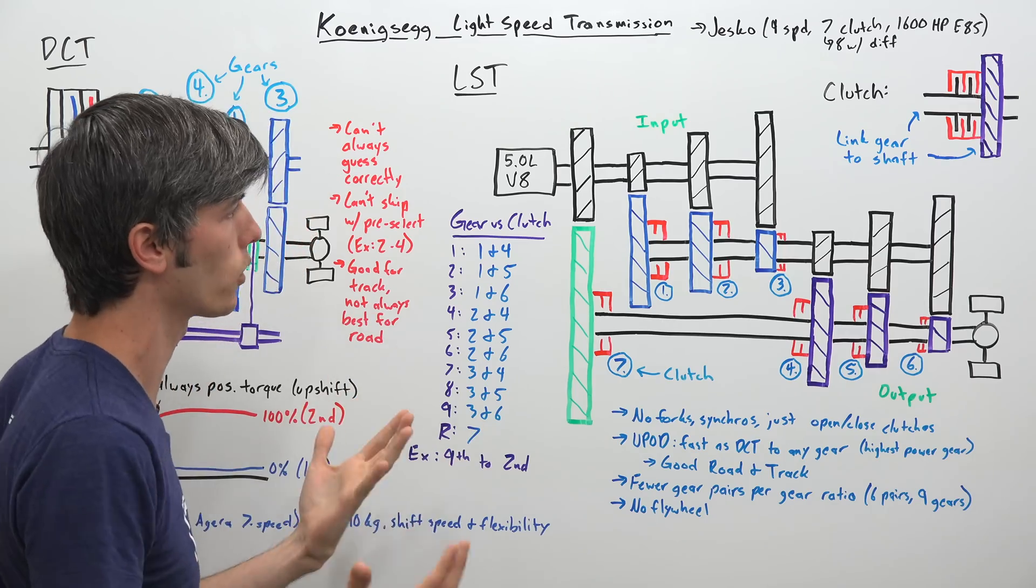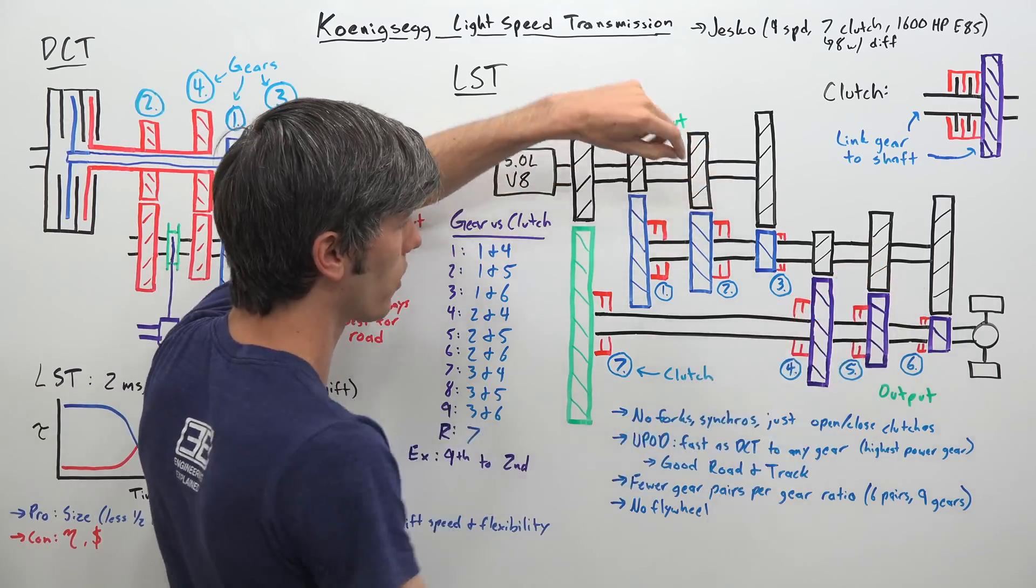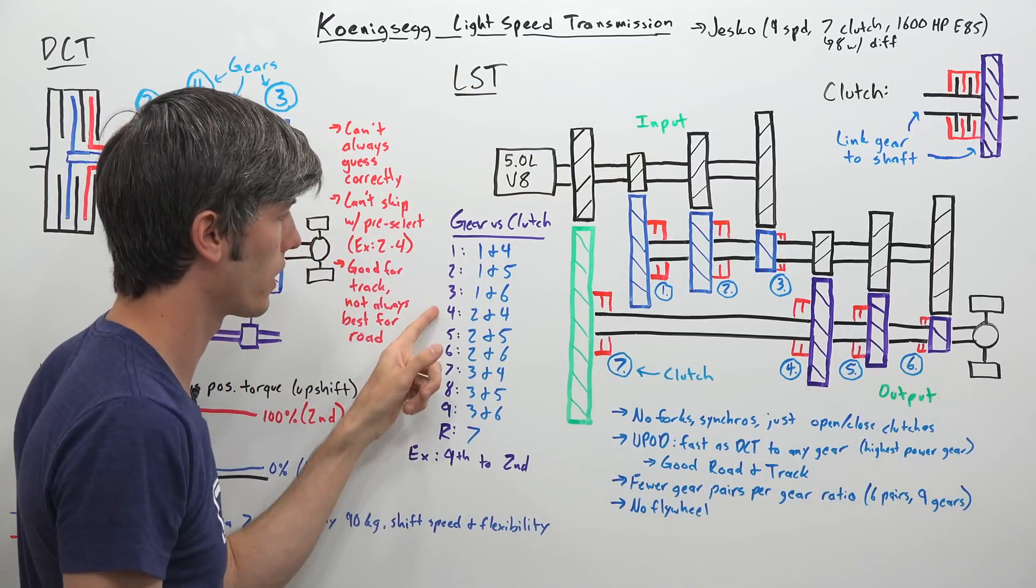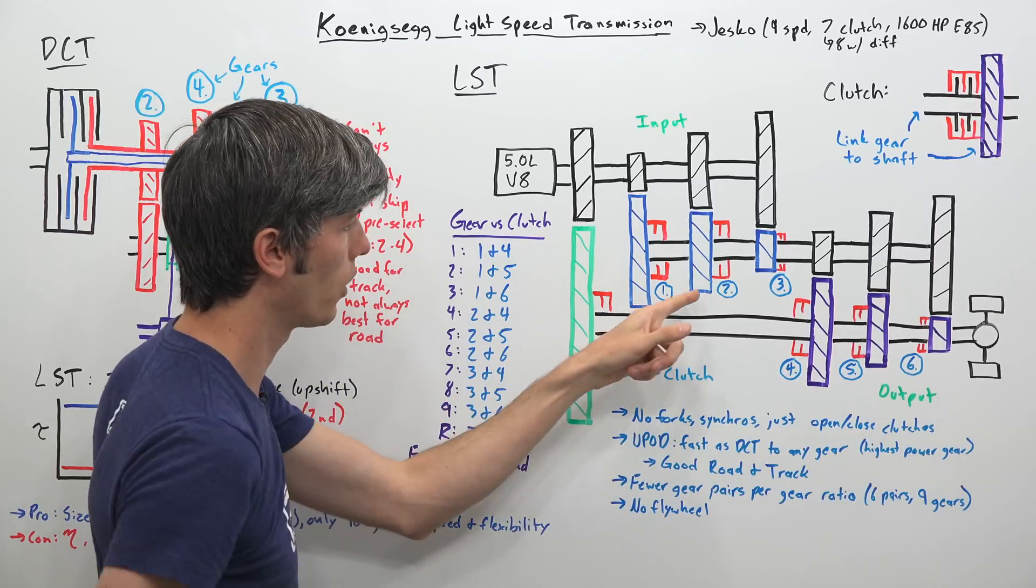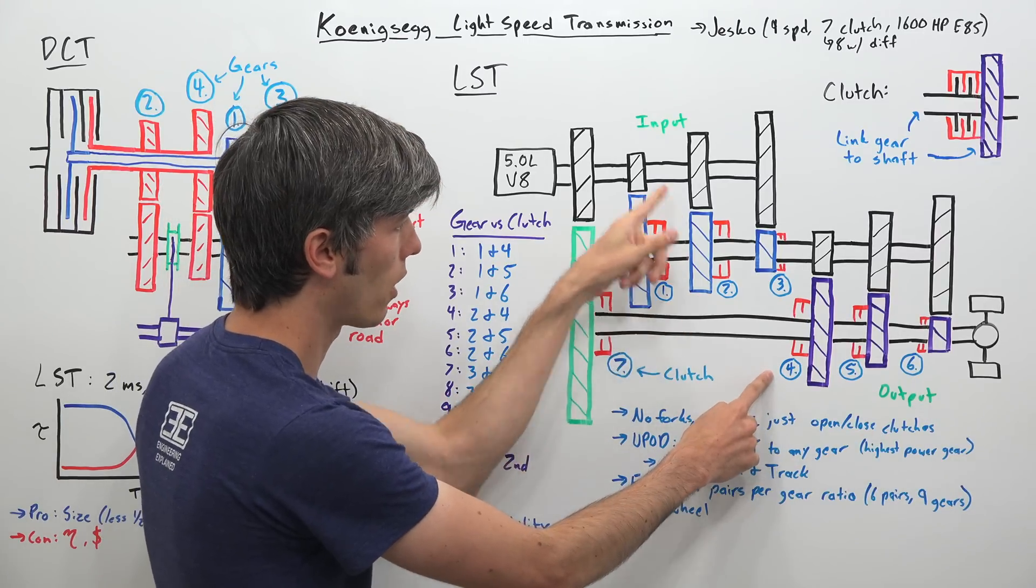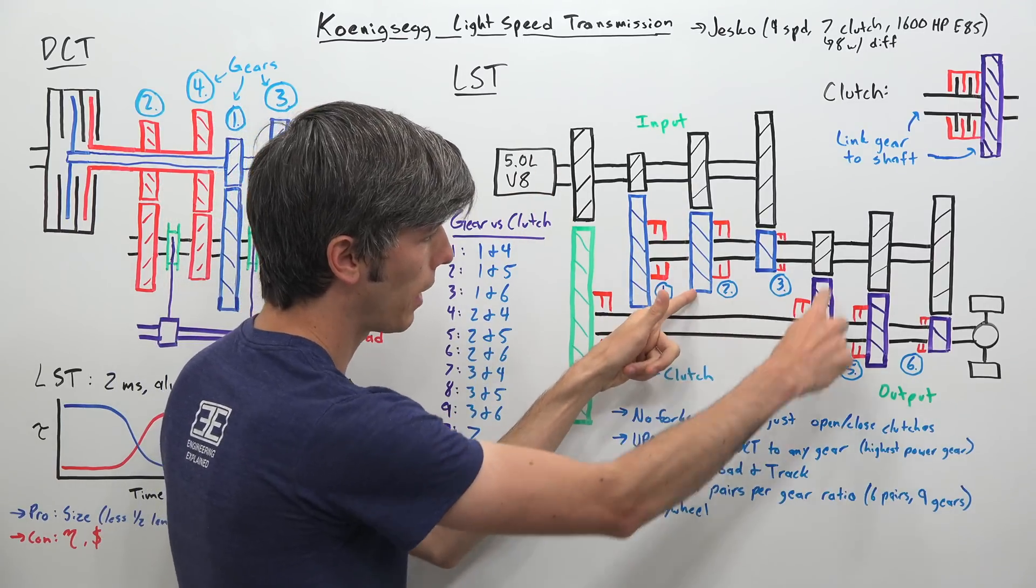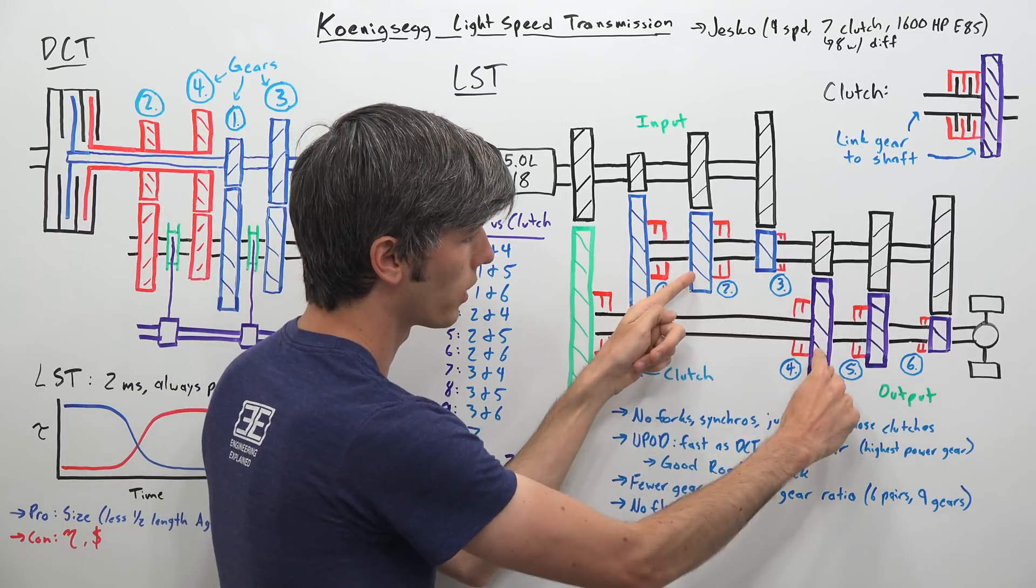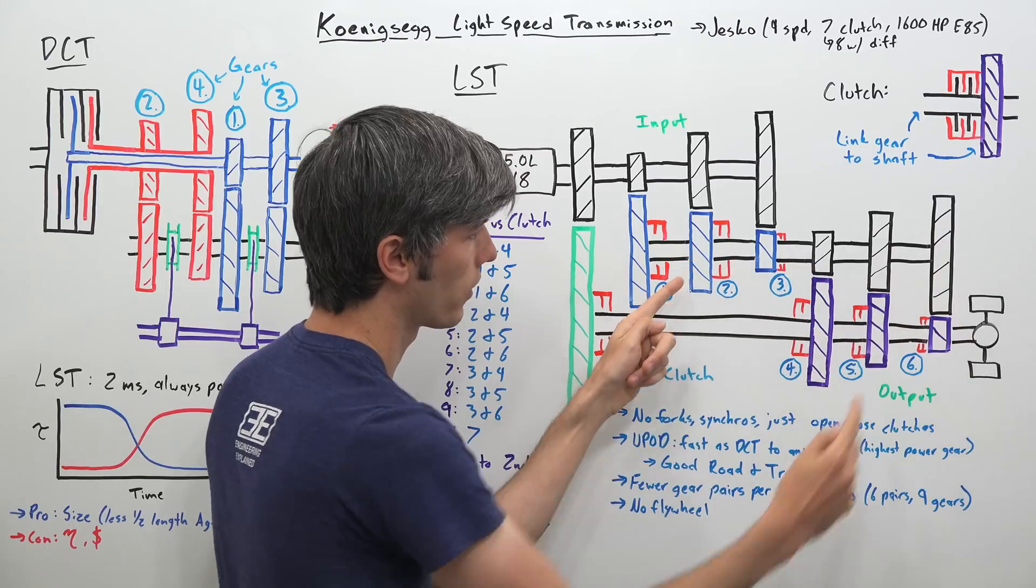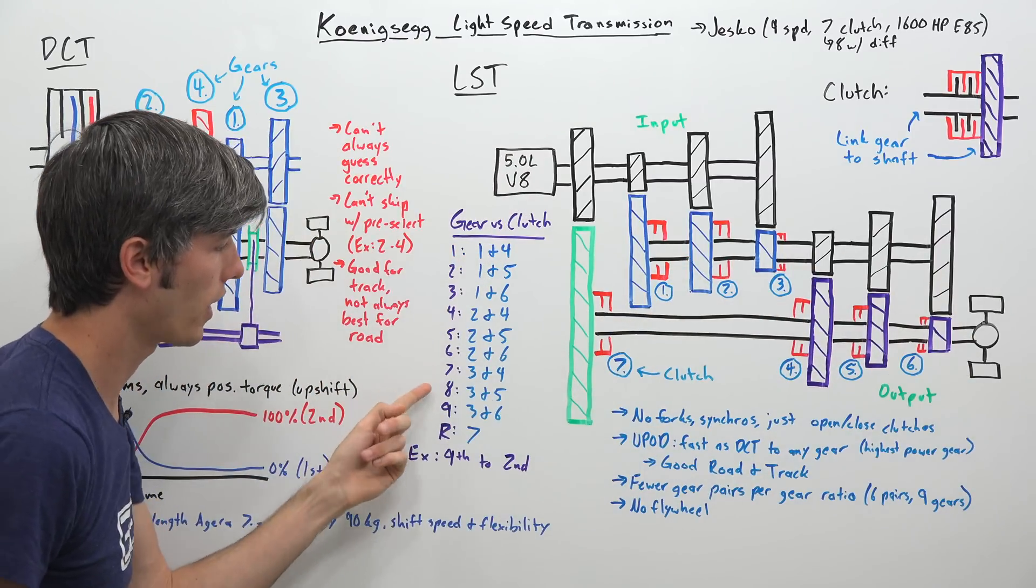So you've got nine total speeds using six gear sets. So let's say we want to then shift from third to fourth. We're going to open up one and six, and then we're going to close two and four. So now we're going power to here and then power to here. And then if we want to go to fifth or sixth gear, instead of going to four, we go over to five, we go over to six.